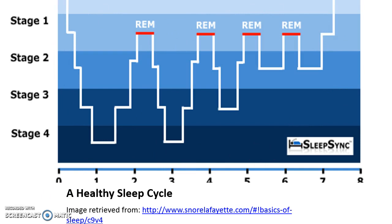We start at an awake state and go down to stage one, where our state of consciousness is now slightly altered. I call it getting into the zone — you kind of know that you're not fully conscious, but at the same time you're not really sleeping. During stage one sleep, if somebody calls your name, you will likely wake up and orient pretty quickly.